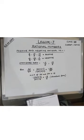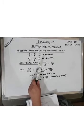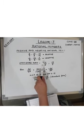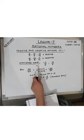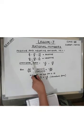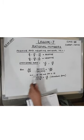A rational number is called a negative rational number if its numerator and denominator are such that one of them is a positive integer and the other is a negative integer. For example, minus 3 upon 8, minus 15 upon 8, and 7 upon minus 11 are all examples of negative rational numbers.